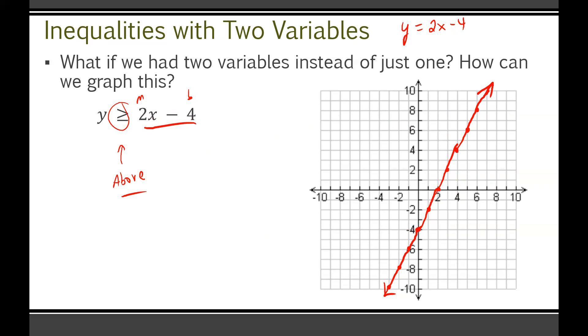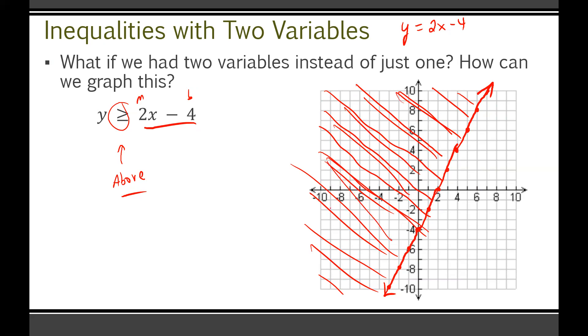So imagine if we just focused when x is equal to 2, for instance. If x was equal to 2, we'd have 2 times 2 minus 4, so we'd have 0. Clearly, we'd have 0 as y. So y could just be any number that's greater than 0 when x is 2. The same goes if x was equal to 3. Y has to be greater than or equal to 2. So what we do is we actually just shade everything above the line, because this is greater than, so shade everything above the line.